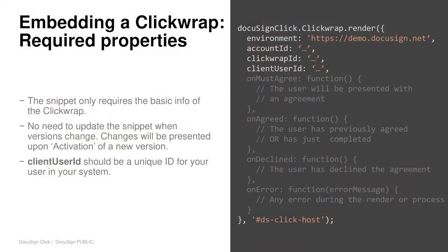Pointing out the key properties — the only ones you actually need to provide are account, Qlik wrap ID, and the user ID you want to sign, along with where you want the Qlik wrap placed in your web page. The client user ID should be a unique ID that you tie to your user in your system. This is how we determine if a user has previously signed a version before and if we need to represent them a new version.